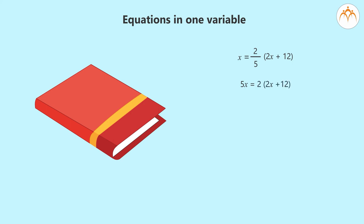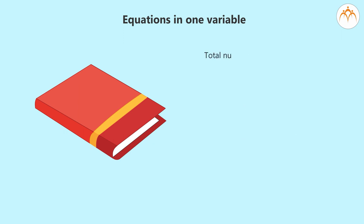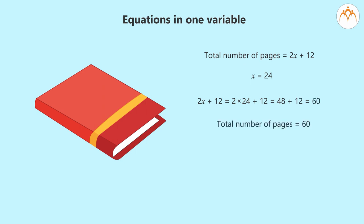That means 5X equals 4X plus 24. If we subtract 4X from both sides we get 5X minus 4X equals 24, so X equals 24. This means I had read 24 pages till yesterday. The total number of pages is 2X plus 12. Since X equals 24, the total pages are 2 into 24 plus 12, which equals 48 plus 12, which equals 60.